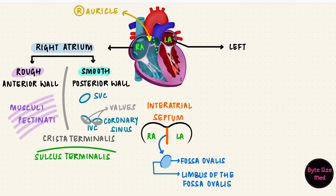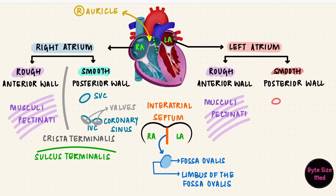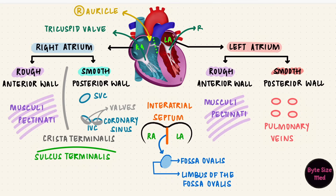The left atrium also has a rough and a smooth part. The rough anterior wall is marked with Musculi pectinati. The smooth posterior wall has the openings of the four pulmonary veins. Between the right atrium and the right ventricle is the tricuspid valve, and on the left side of the heart is the mitral valve. These are the atrioventricular valves.